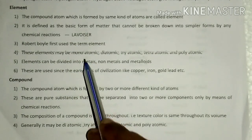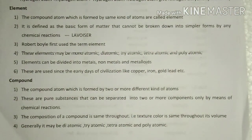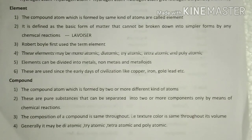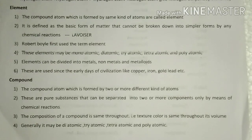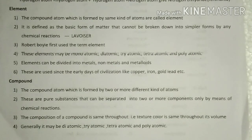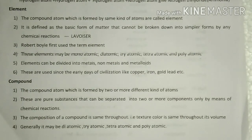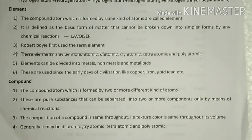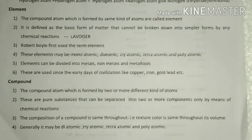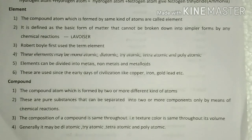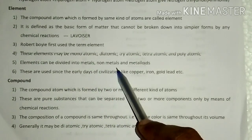Elements may be monoatomic if a single atom exists — all metals and all inert gases are monoatomic. If an element contains two atoms, it is called diatomic — for example, oxygen O2, nitrogen N2. If it contains three atoms, it is called triatomic — for example, ozone O3. Tetraatomic means four atoms — for example, phosphorus P4. Polyatomic means more than four atoms. Elements can be divided into metals, nonmetals, and metalloids.